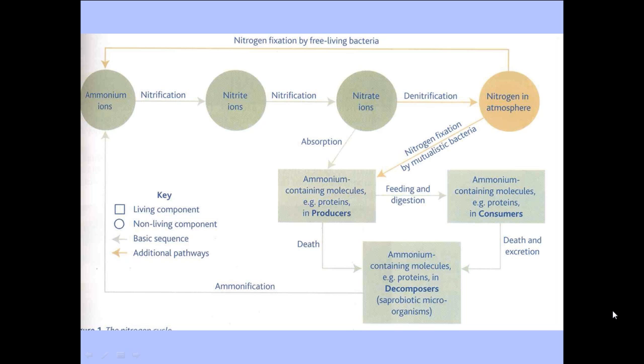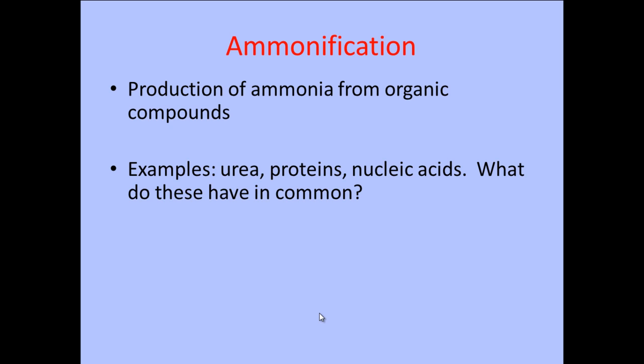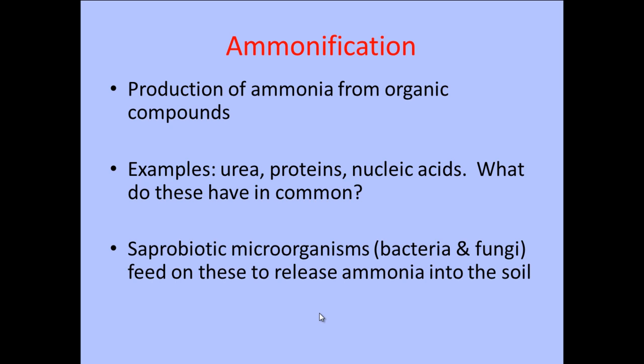Once the decomposers have undergone saprobiotic digestion, they start to convert some of the ammonium containing molecules into ammonium via a process called ammonification. Ammonification is the production of ammonia from organic compounds — organic meaning from living things. Some examples are urea, proteins, and nucleic acids, all of which contain nitrogen. This process is carried out by saprobiotic microorganisms — bacteria and fungi — which feed on these compounds and release ammonium or ammonia into the soil, where it can be stored as ammonium ions (chemical formula NH4+).